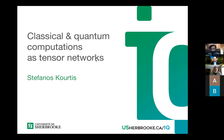Stephanos obtained his undergraduate and master's degrees in Greece at the National Technical University of Athens. He then moved to Germany for his PhD, obtaining his degree from the Dresden University of Technology in 2014 in Physics. He then moved on to a first postdoctoral position — a fellowship awarded by ICAM, the Institute for Complex Adaptive Matter — splitting his time between the Cavendish Lab at Cambridge in the UK and Princeton University in the US.